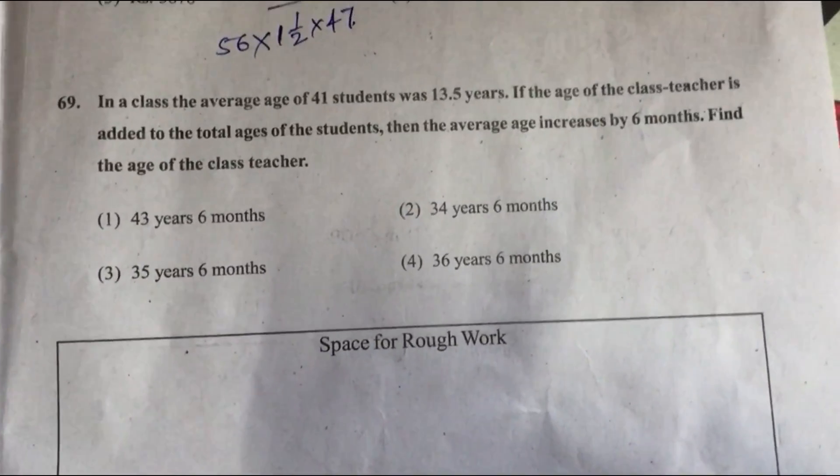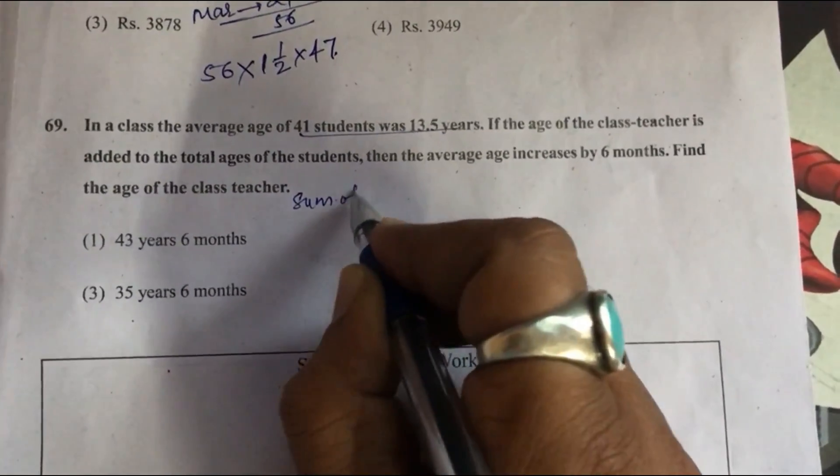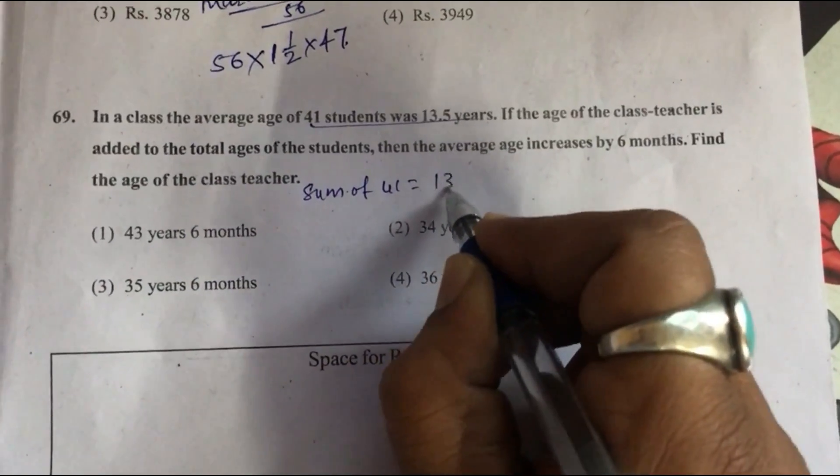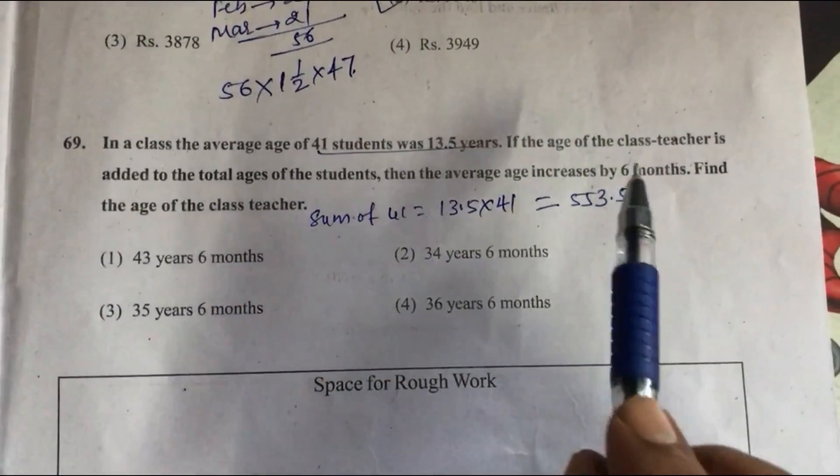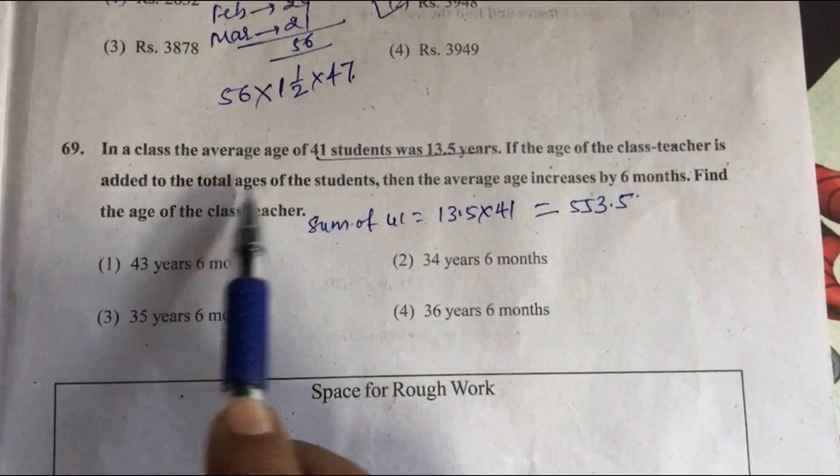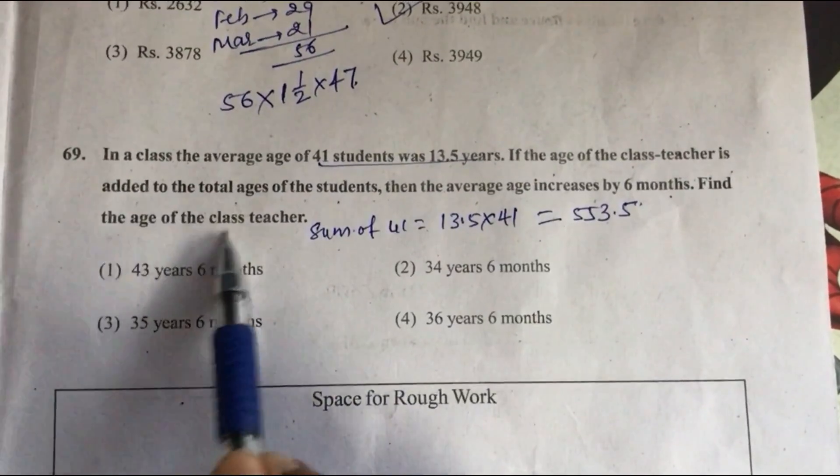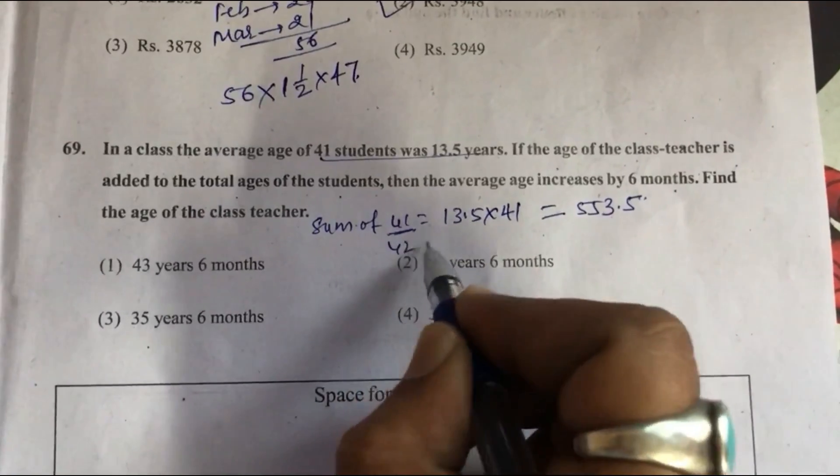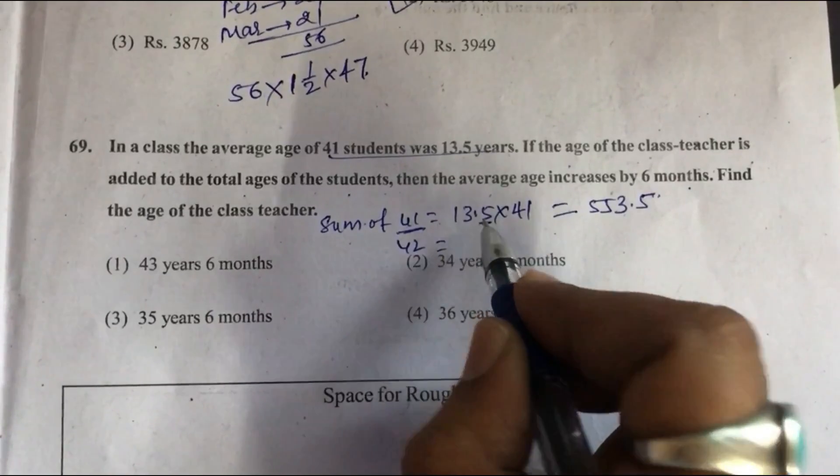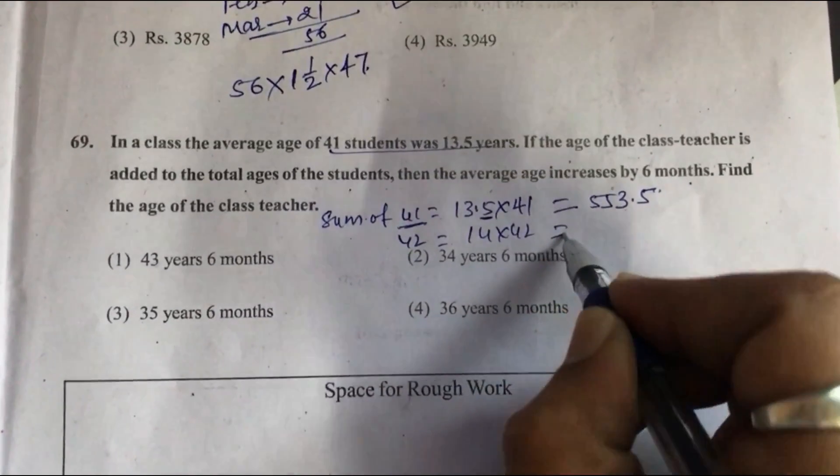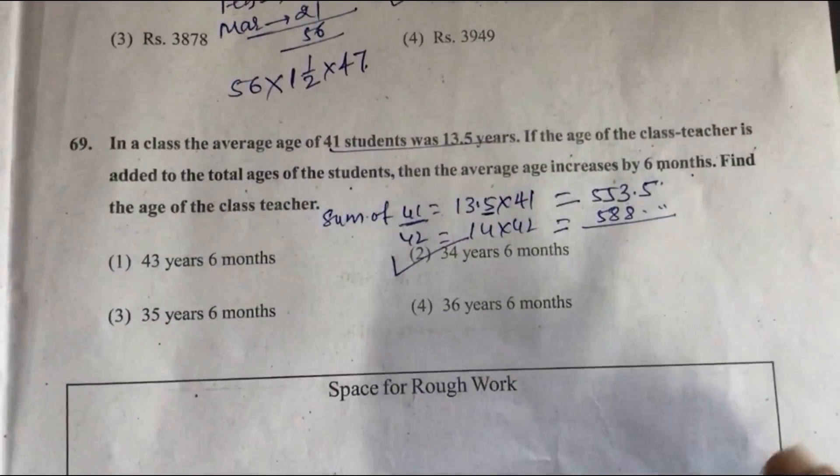Question 69: In a class, the average age of 41 students was 13.5 years. Sum of 41 students is 13.5 into 41 equals 553.5. Now if the age of class teacher is added to the total age of the students, then the average is increased by 6 months. Find the age of the class teacher. Now instead of 41, there are 42, and the average is 14. This is 14 into 42. Subtract these two, we will get option 2, 34 years 6 months.